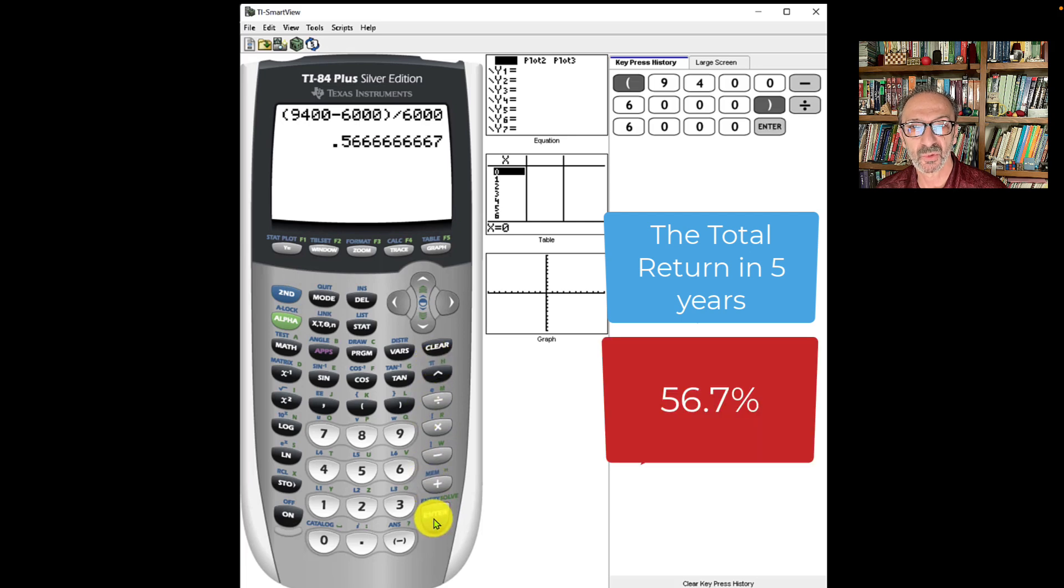And it shows 0.56 repeating, but we need to read this as a percent. So we could multiply it by 100 percent or move the decimal two places, and we read it as 56.7 percent.